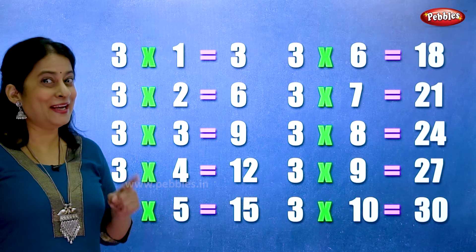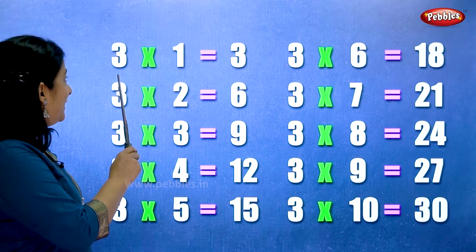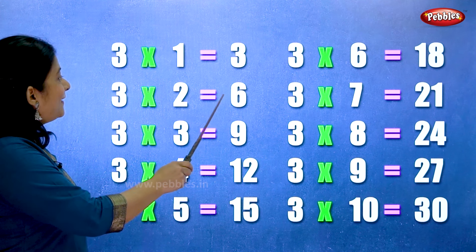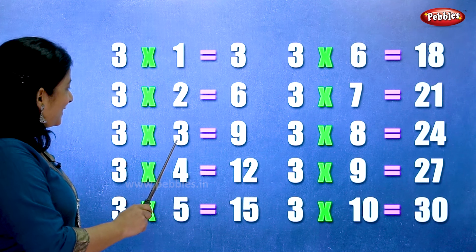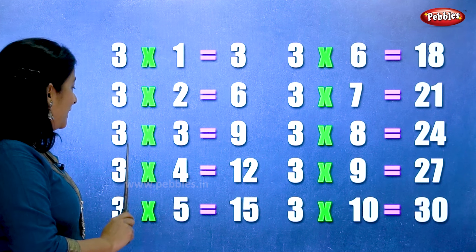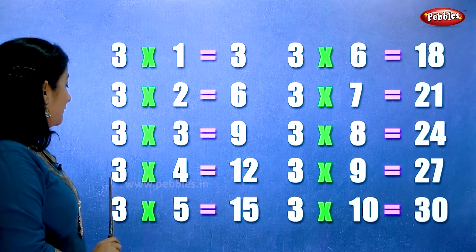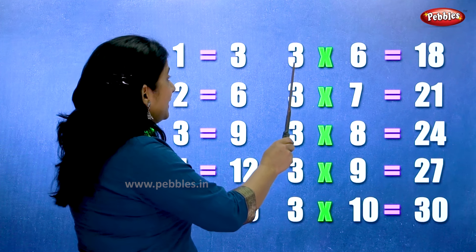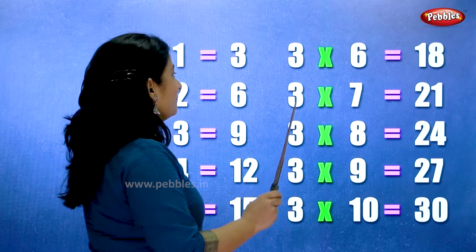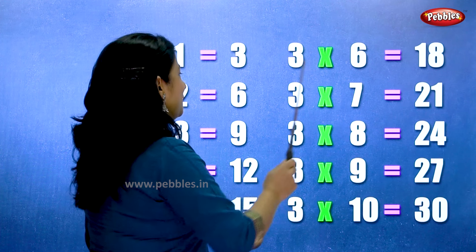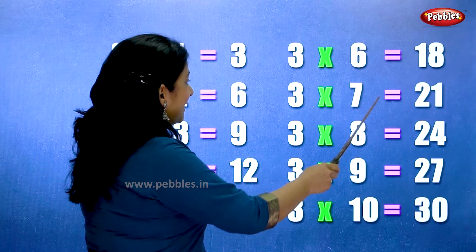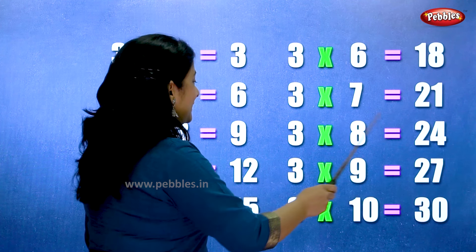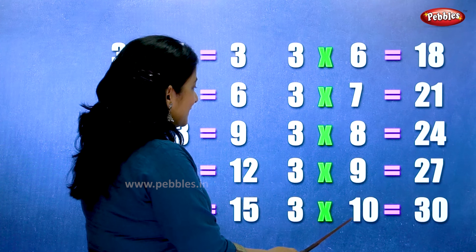Let's learn the table of 3 one more time. 3 ones are 3. 3 twos are 6. 3 threes are 9. 3 fours are 12. 3 fives are 15. 3 sixes are 18. 3 sevens are 21. 3 eights are 24. 3 nines are 27. 3 tens are 30.